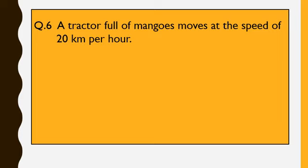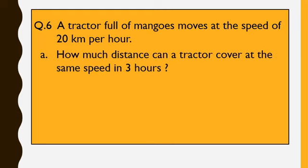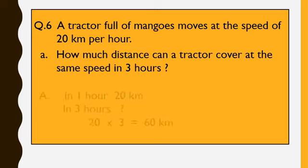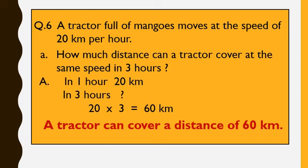A tractor full of mangoes moves at the speed of 20 km per hour. How much distance can a tractor cover at the same speed in 3 hours? It is already given that in 1 hour the tractor covers 20 km. So in 3 hours, how much will it cover? So 20 threes are 60 km. So a tractor covers a distance of 60 km.